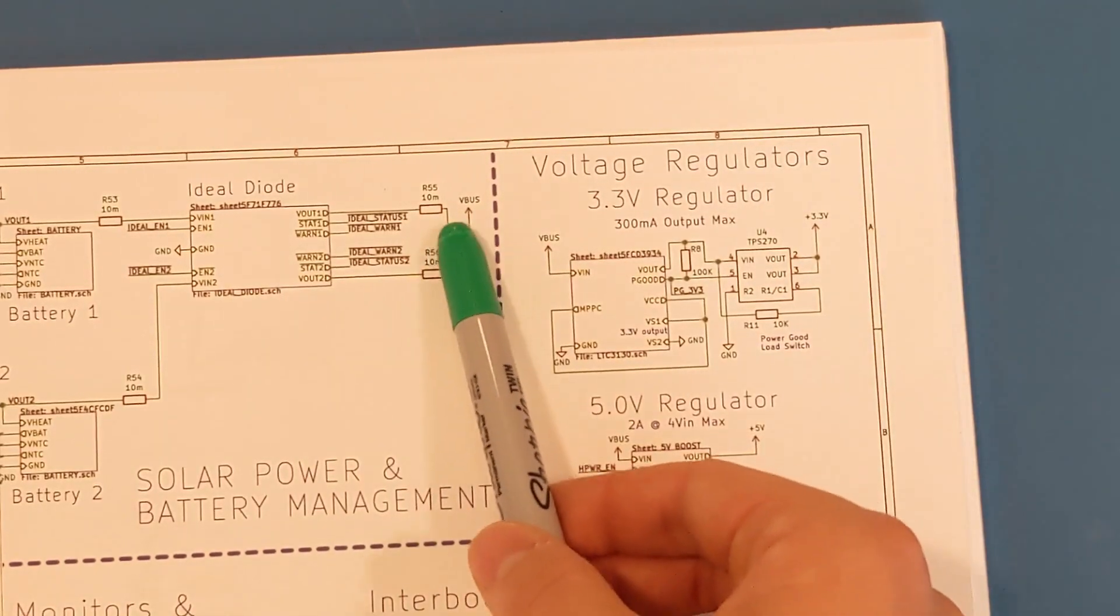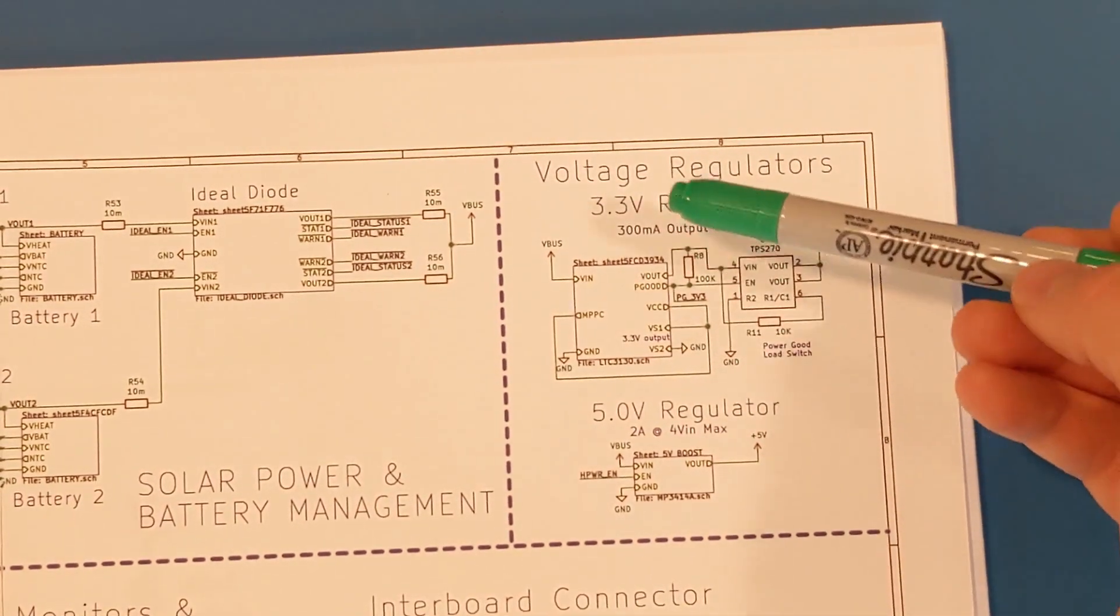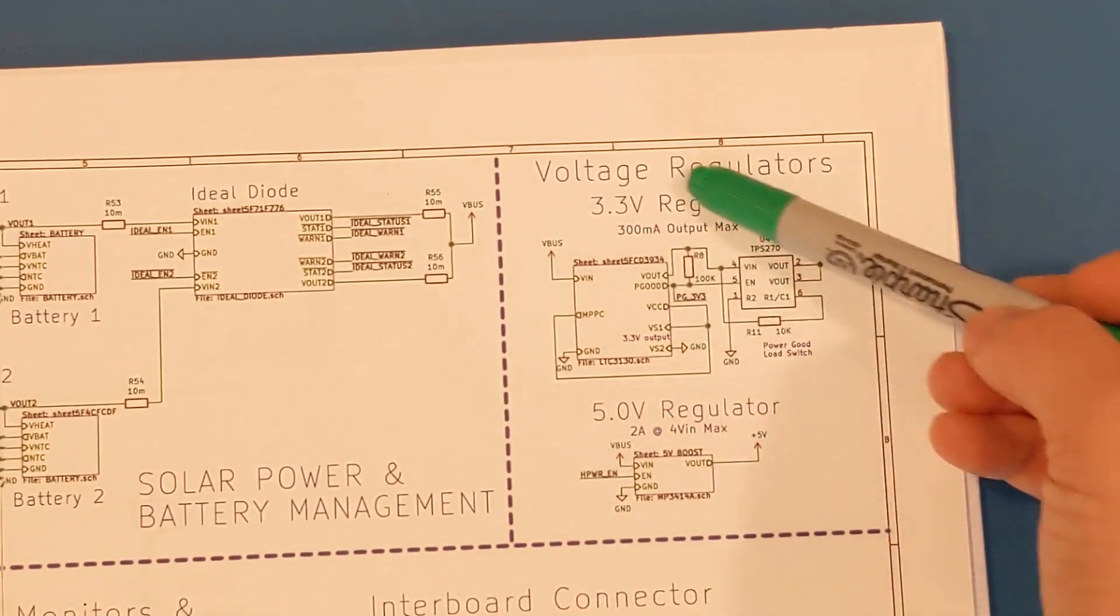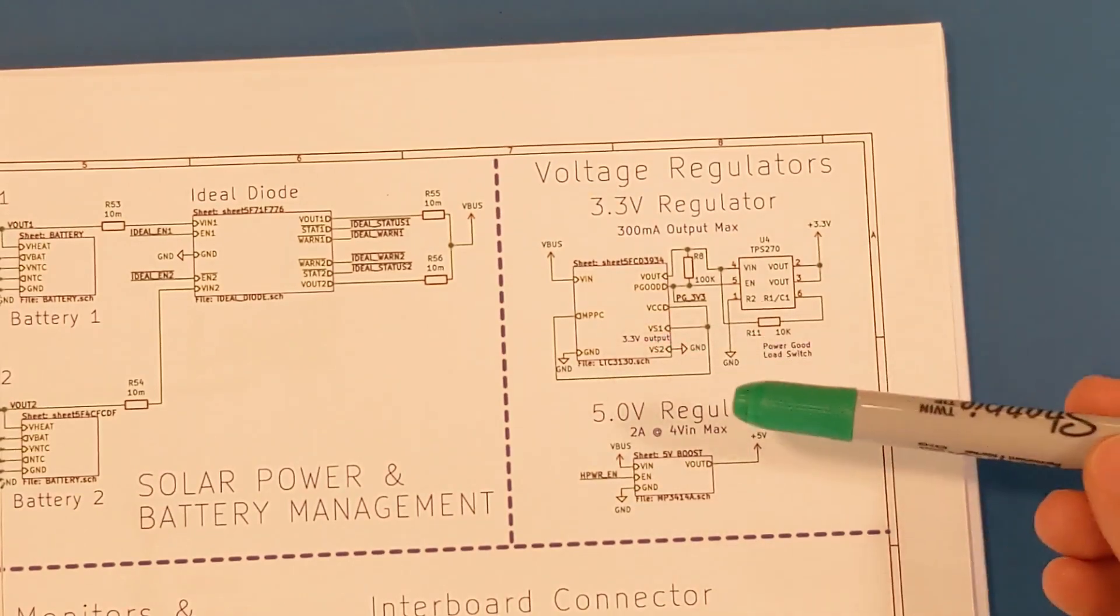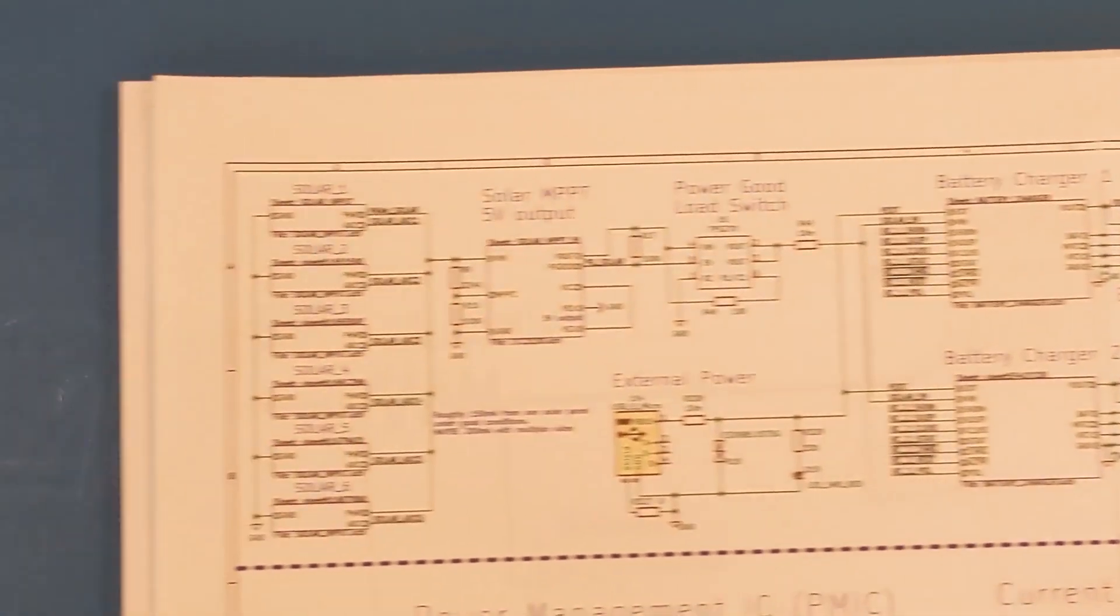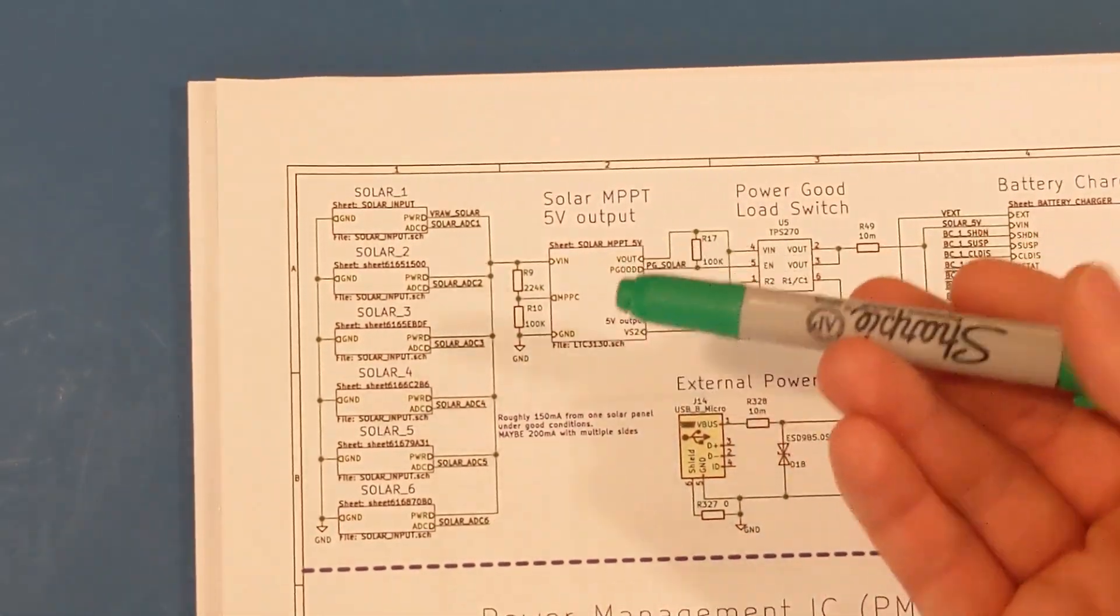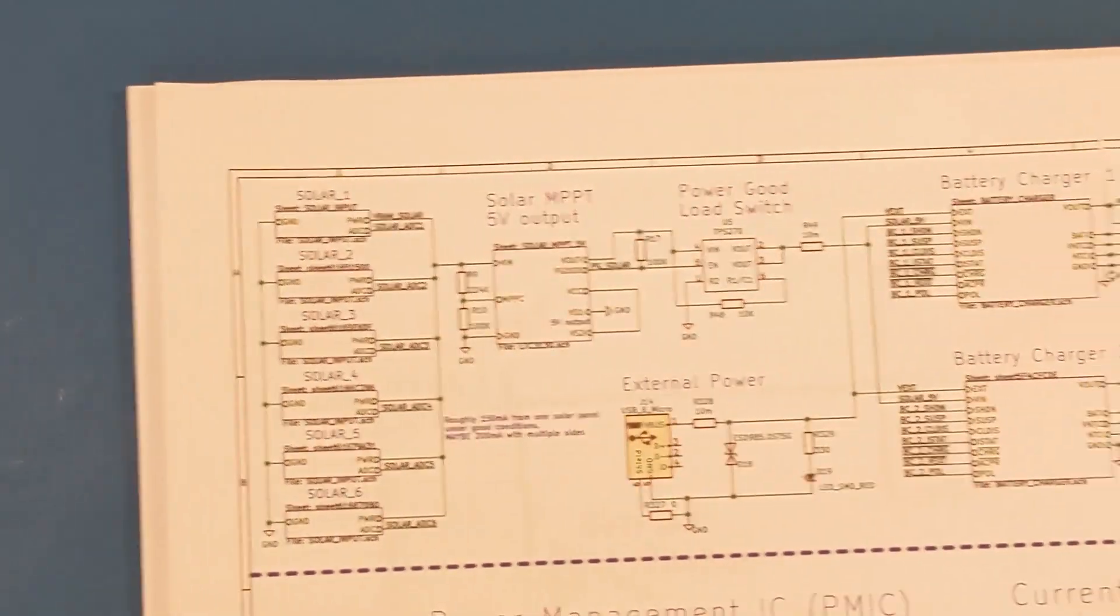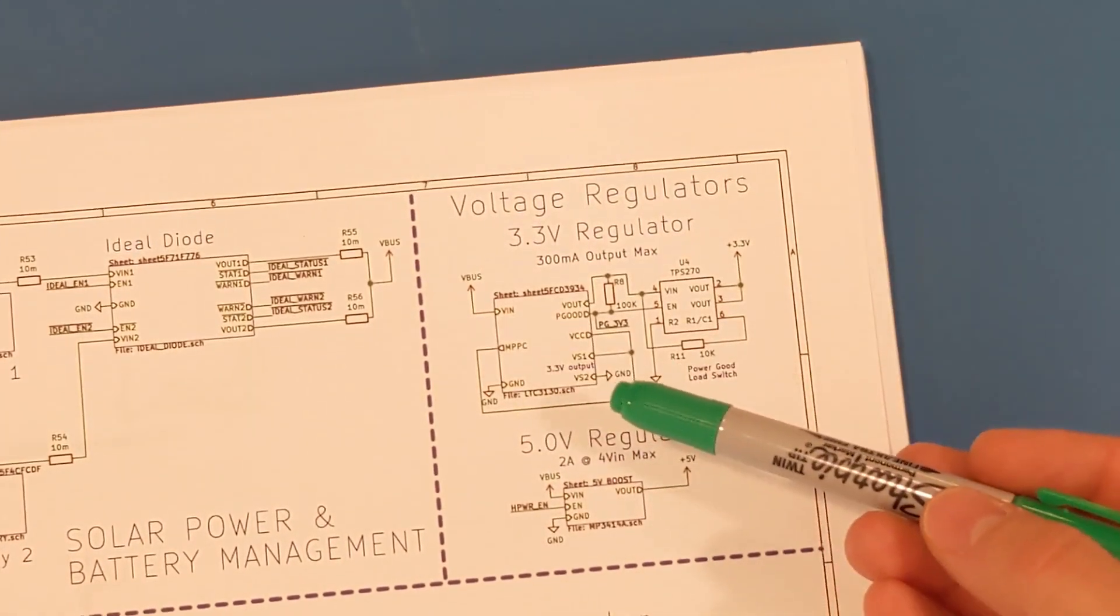Moving right along, VBUS only goes to these regulators here. We take the battery voltage and put it into this 3.3 volt regulator and a 5 volt high power regulator. This 3.3 volt regulator was actually convenient. It is the same LTC3130 that's used for the maximum power point tracker, just with a couple different tweaks. You can have it output 3.3 volts, and you can disable the maximum power point tracking. So it's convenient that I get to reuse that chip here.